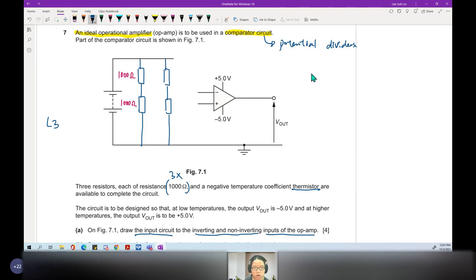So if it's cold or low temperature, V out is negative 5 volt. If V out is negative 5, this negative 5 implies that V minus must be bigger than V plus. Because at low temperature, the resistance of the thermistor RT increases. Think about your band theory.